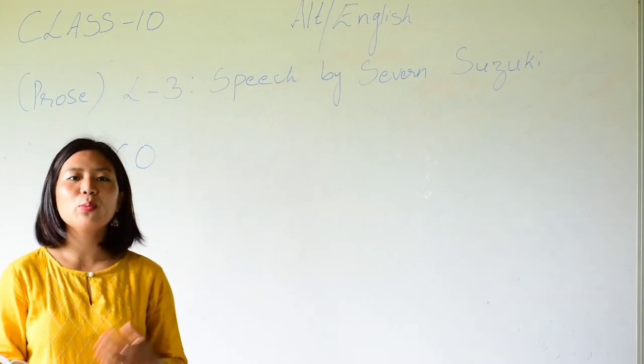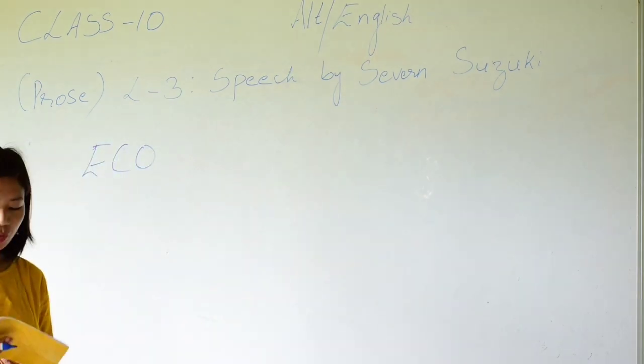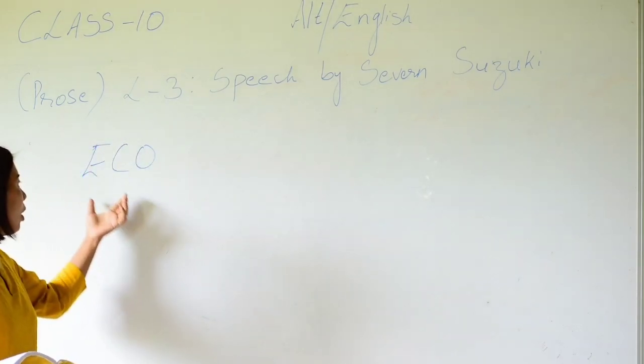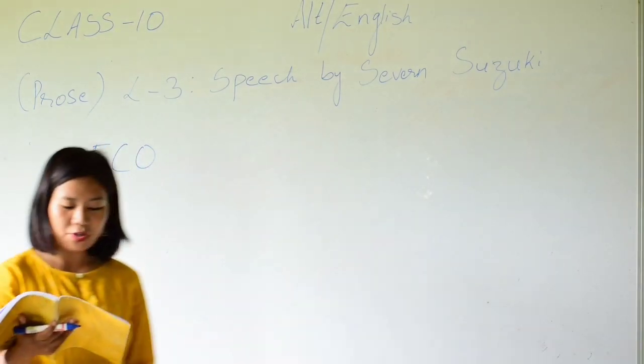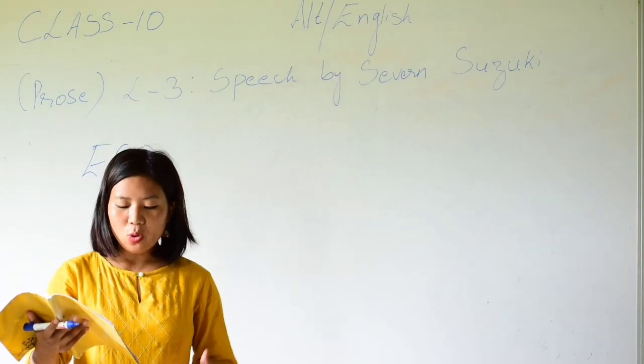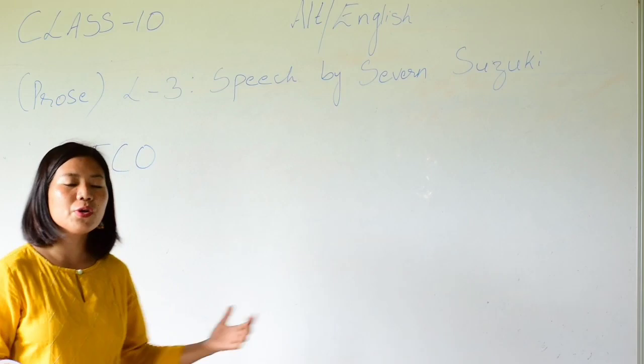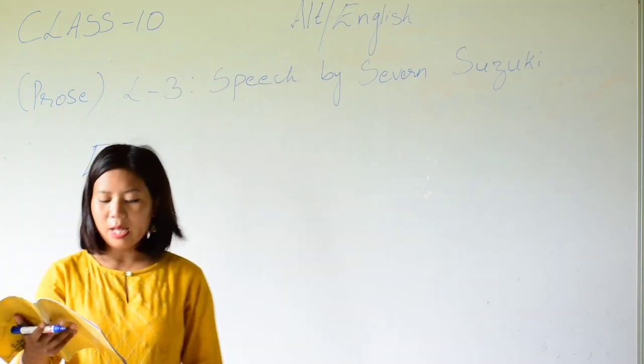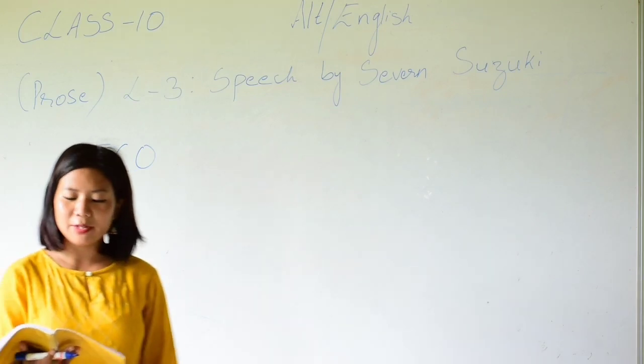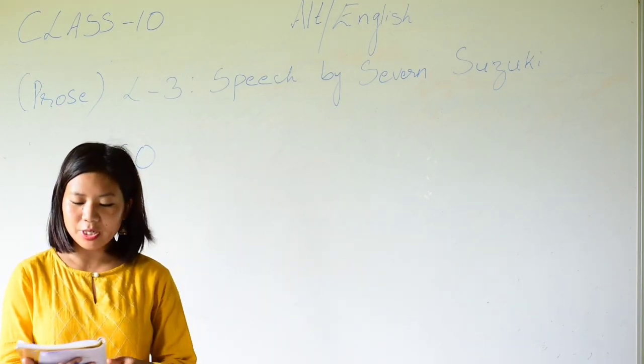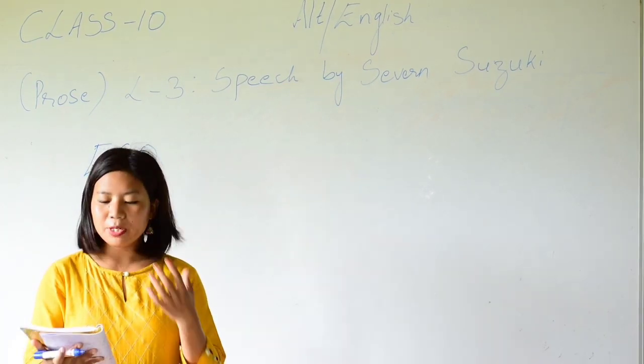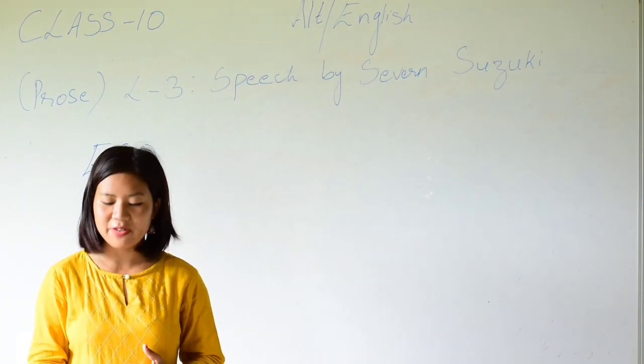In 1992, when Severn was 12 years old, she and other members of ECO raised money to attend the Earth Summit held at Rio de Janeiro, Brazil. This Earth Summit is a gathering where all the leaders of countries discuss ways of protecting the environment and preserving the Earth's biodiversity.